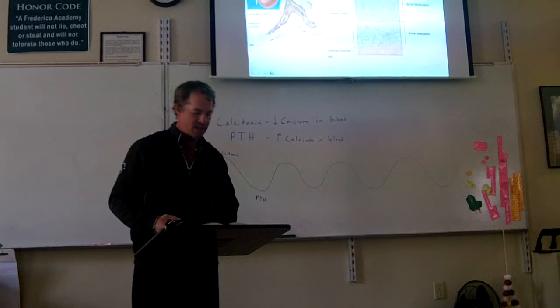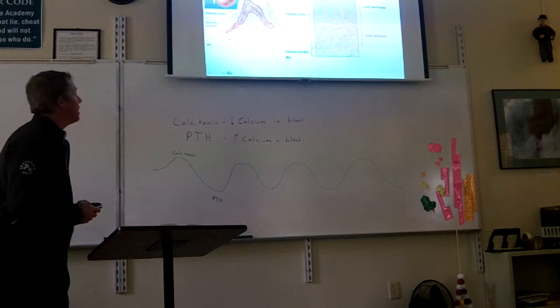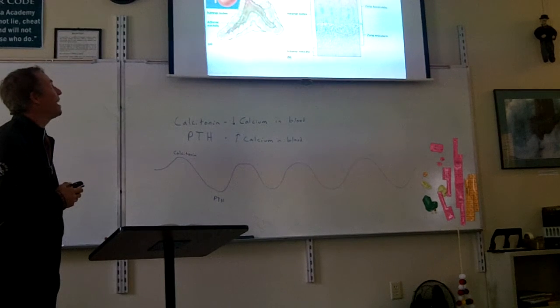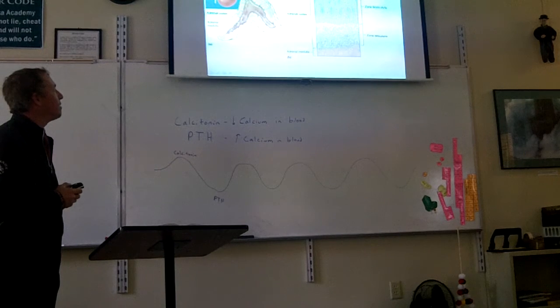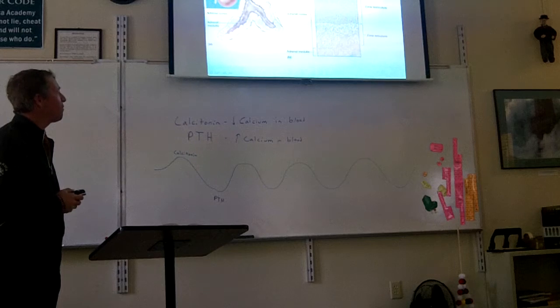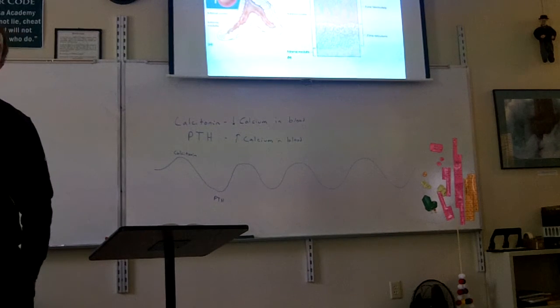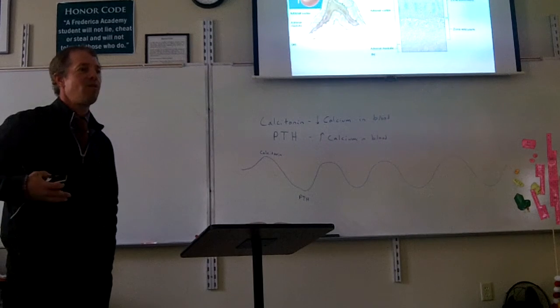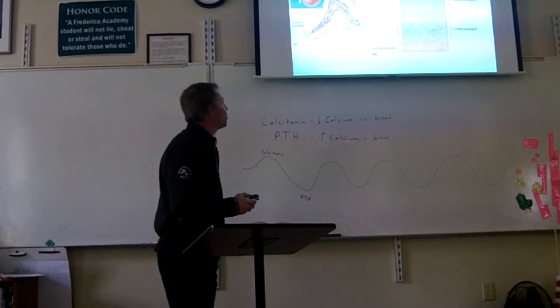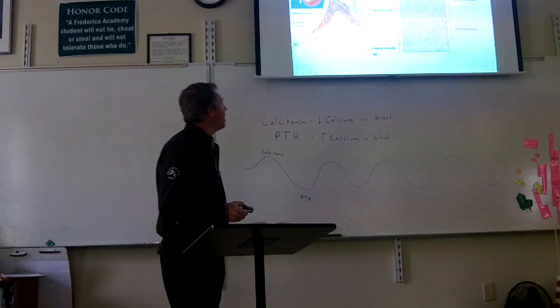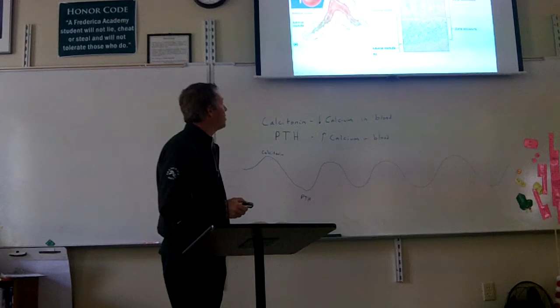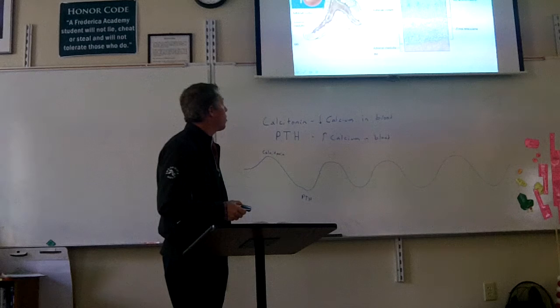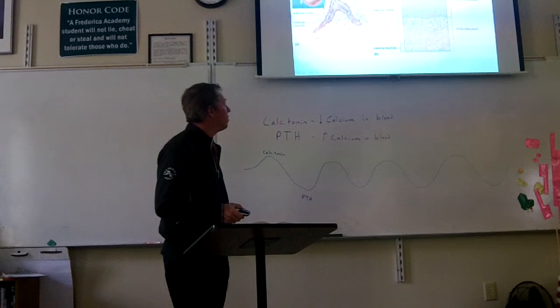Vitamin D is maintained by the kidneys too, in response to PTH. And vitamin D tells the intestine to absorb more calcium from your food. All three of those make the calcium levels go up. The next section, 11.8, talks about the adrenal glands. The adrenal glands sit right on top of your kidneys. It's like the kidney has a little hat on it. It's called the adrenal gland.